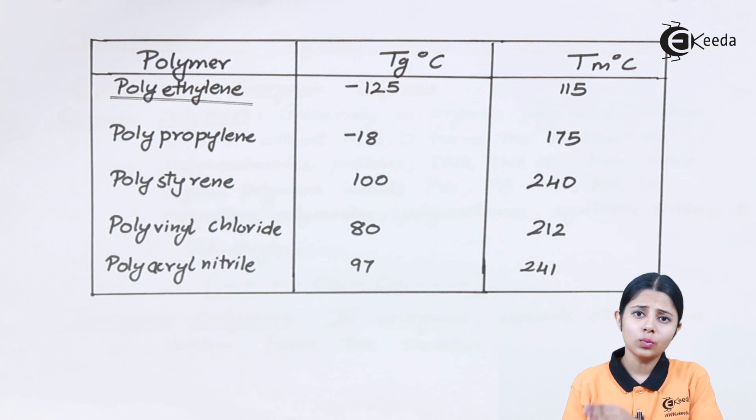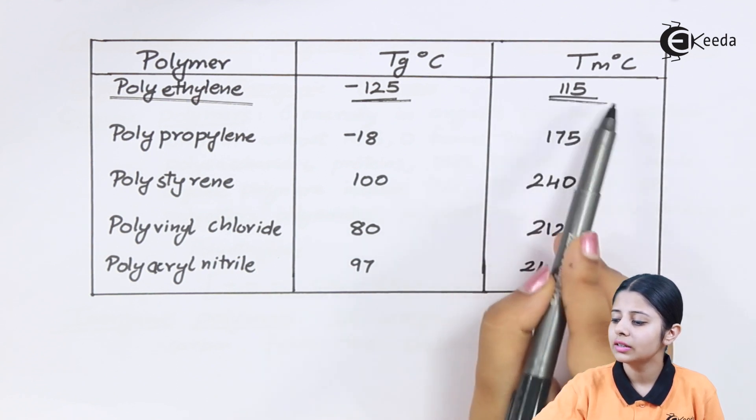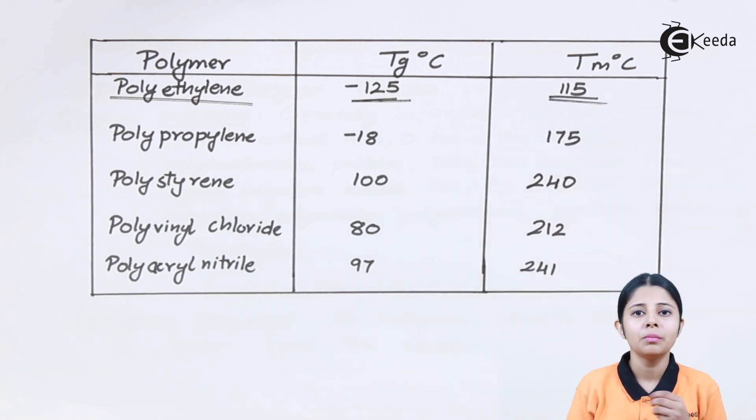At what temperature will it get converted into a glassy state? It is minus 125 degrees Celsius. When I keep polyethylene at minus 125 degrees Celsius it will get converted into proper glassy state. If I apply heat to it, at around 115 degrees Celsius the entire polyethylene will melt and it will become liquid.